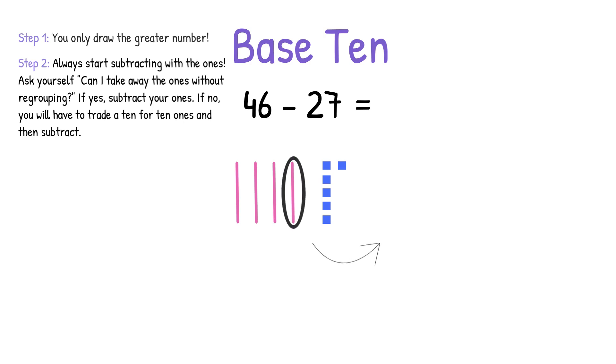I'm going to circle a 10, draw my arrow, scoot it over to the 1s, and draw my 10 1s. Then I'm going to go back and cross out that 10 because it's not there anymore. It is now 10 1s. Now we have enough to subtract seven 1s, so let's go ahead and cross out seven 1s.